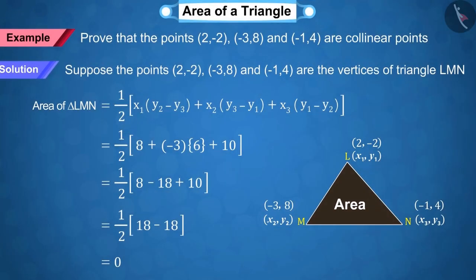So, we can say that our assumption that the given points are the vertices of a triangle is wrong.